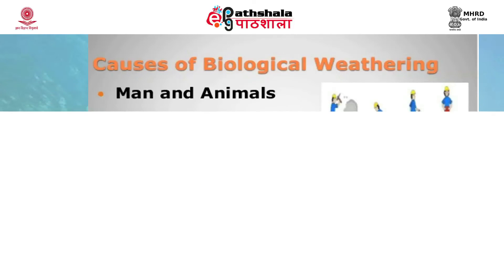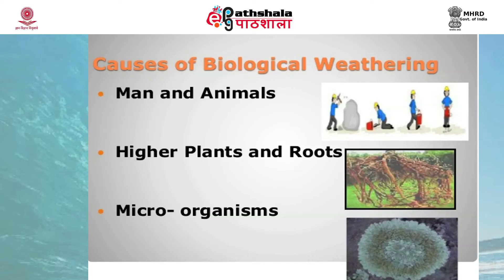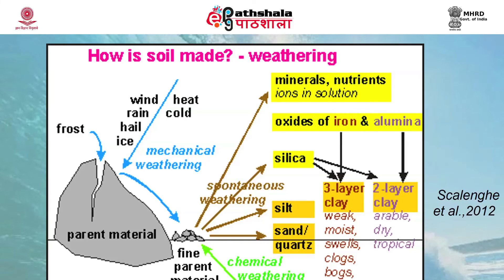Animals can also break materials through the consumption of soil particles, and particles can fracture due to animal burrowing or pressure from growing roots. Many large soil organisms cause the movement and mixing of soil particles, introducing material to different weathering processes at distinct locations in the soil profile. Simple chemical processes like solution can be enhanced by carbon dioxide produced by respiration, which mixes with water to form carbonic acid. Chelation is a biological process where organisms produce organic substances that decompose minerals and rocks by the removal of metallic cations.